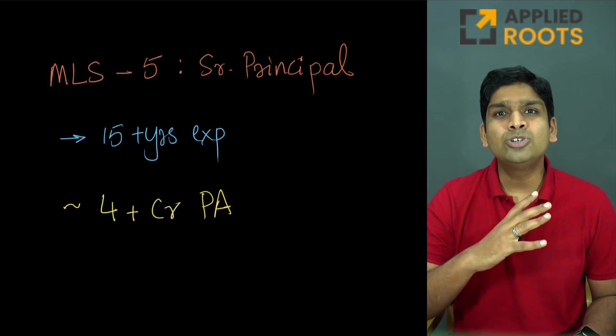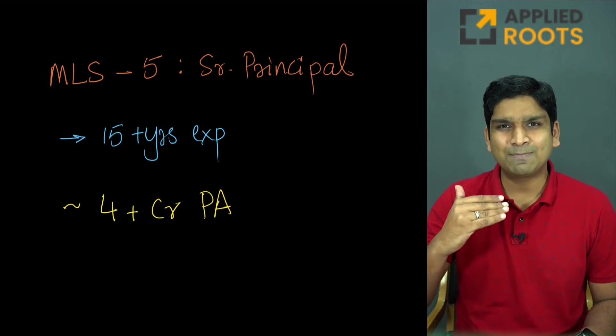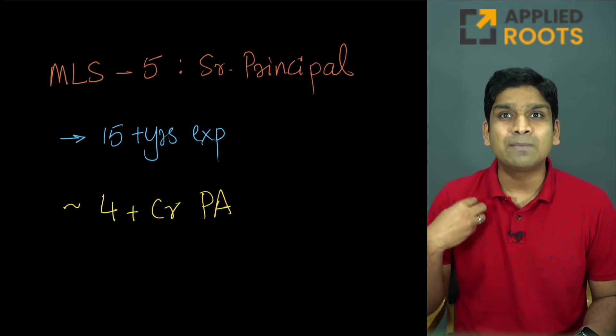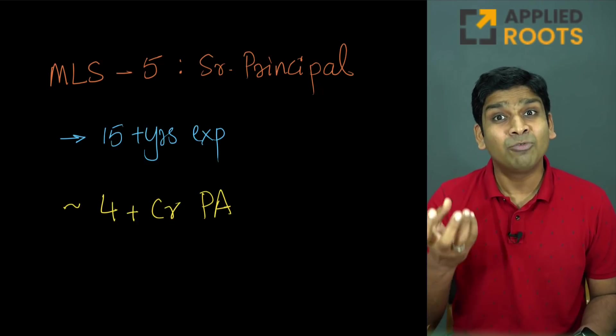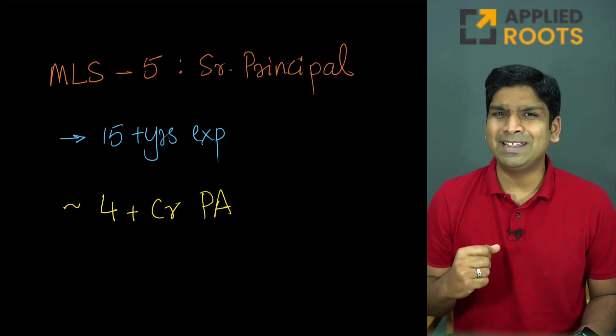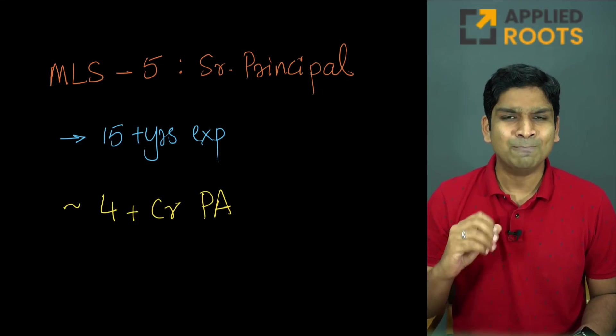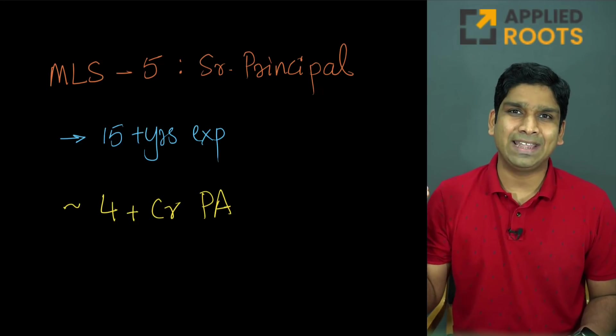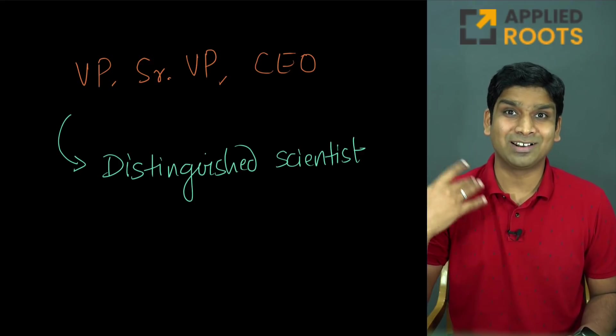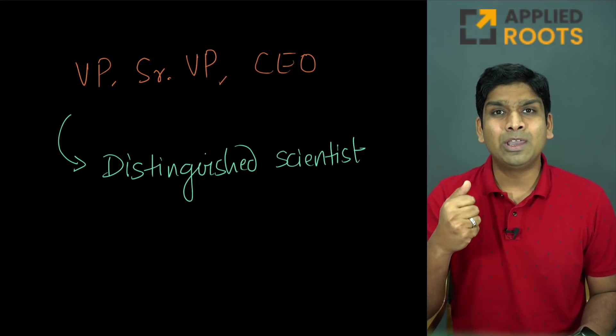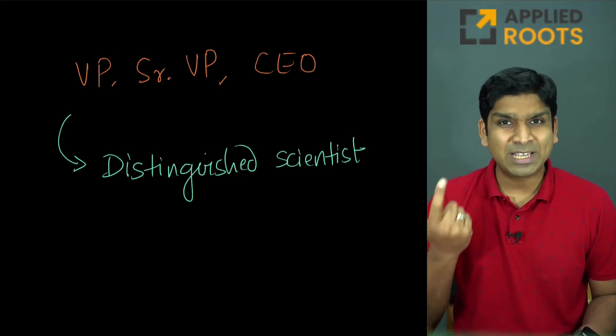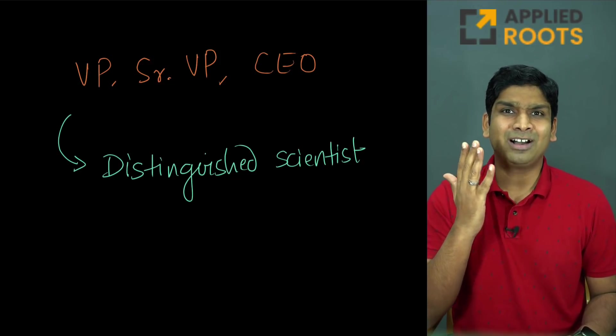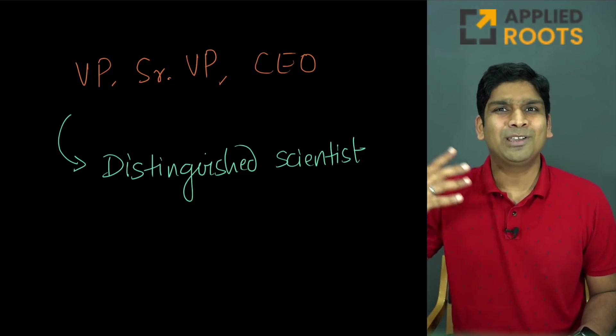There is a huge variability in compensation as people go up based on the skills they bring to the company and what they can deliver and what they've built in the past. A senior principal scientist is sort of like a director level on the managerial side. You also have other more senior people. You have scientists at vice president level, people at senior vice president level, and beyond a vice president and senior vice president, you typically have the CEO.